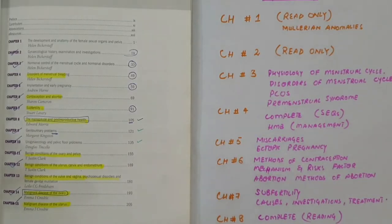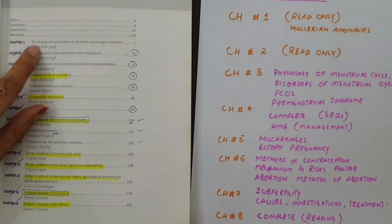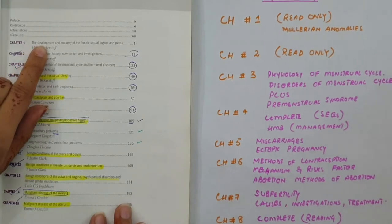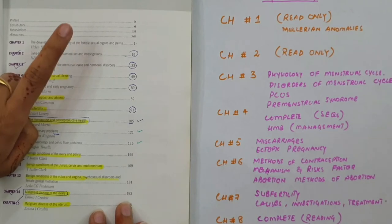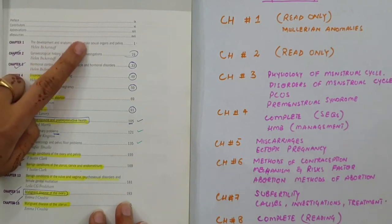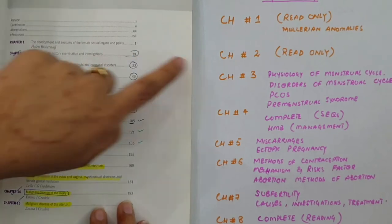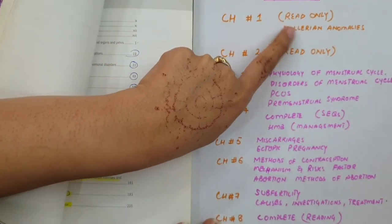Now we will take a different overview of each chapter. Chapter number one, which is the development and anatomy of the female sexual organs and pelvis, it is only a reading. If there is something important that comes from it, it comes from Mullerian anomalies. In Mullerian anomalies there is a question about Mullerian agenesis.